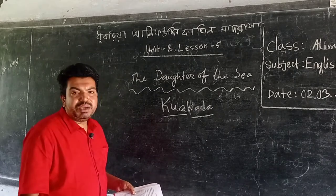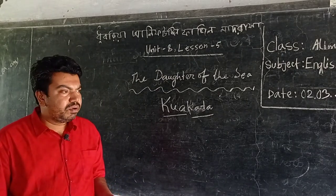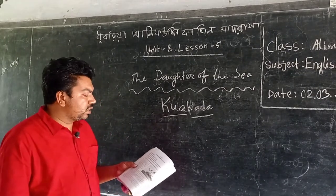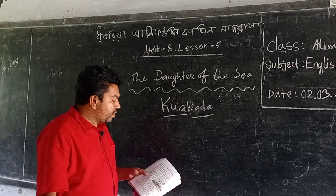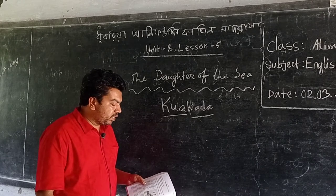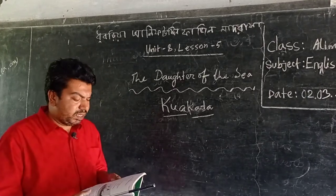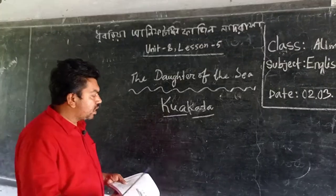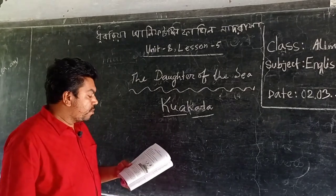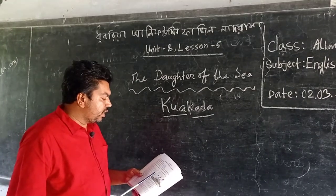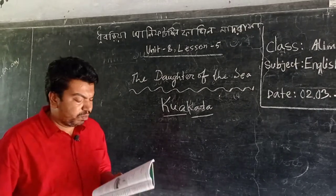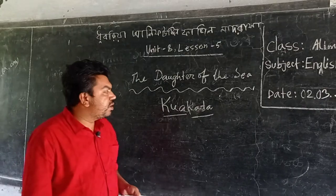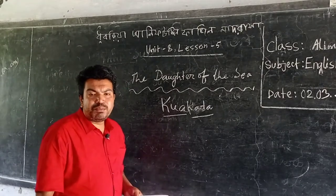Kuakata is located in Latachapali union, under Kalapara police station of Patuakhali district. It is about 30 kilometers in length and six kilometers in breadth. It is about 70 kilometers from Patuakhali district headquarters.